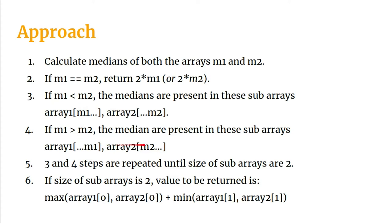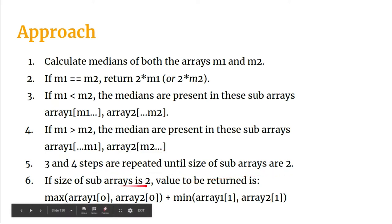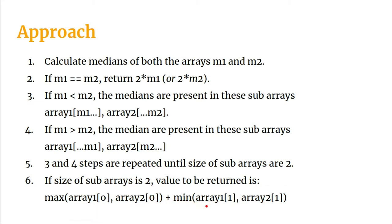If m1 is not less than m2, the medians will be in the sub-arrays: array one from the start to the middle element, and array two from the middle element to the last. These steps are repeated until the sub-array sizes become two, at which point we return the maximum of the first elements of both arrays plus the minimum of the second elements of both arrays.